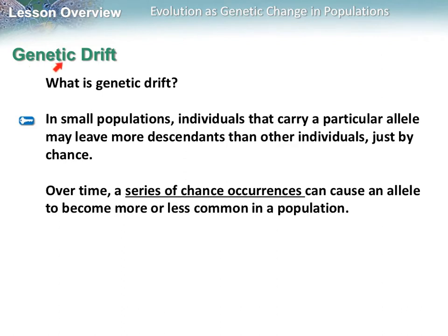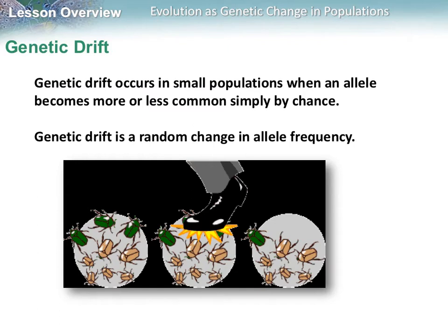Another term is genetic drift. In a small population, individuals that have a specific allele can leave more descendants than others just by chance. We know it is chance which chromosomes get passed on during meiosis, and a series of chance occurrences could cause an allele to become more or less common. For example, a small population of bugs — if a couple get squashed, the allele frequency changes, resulting in fewer green and a higher percentage of brown.